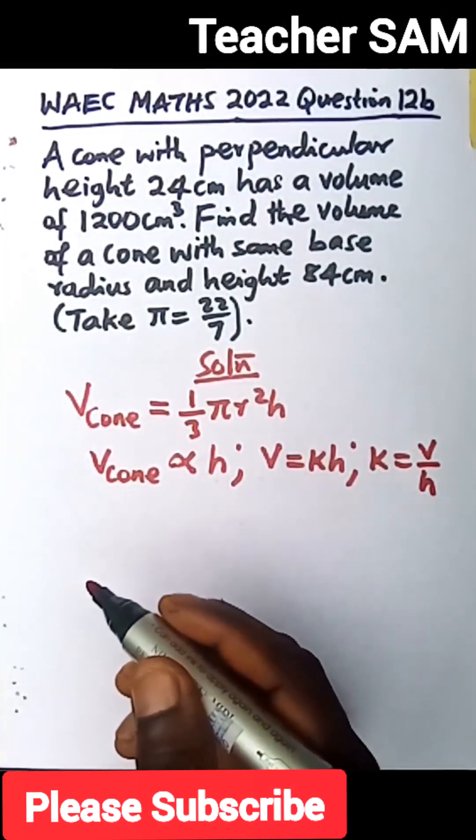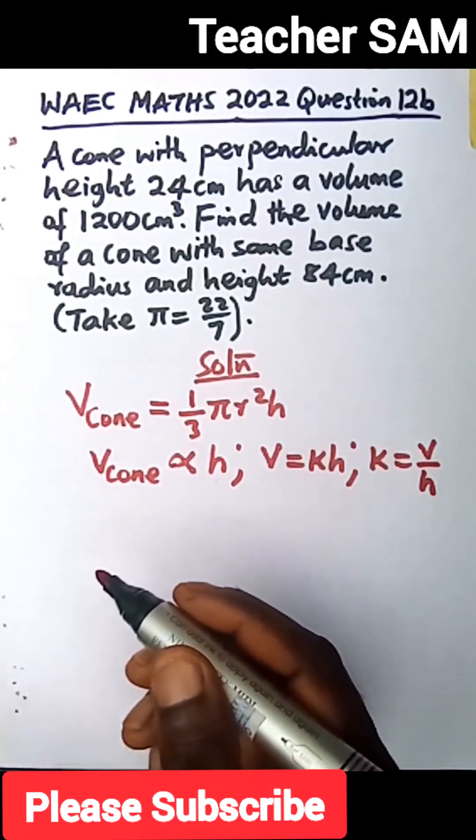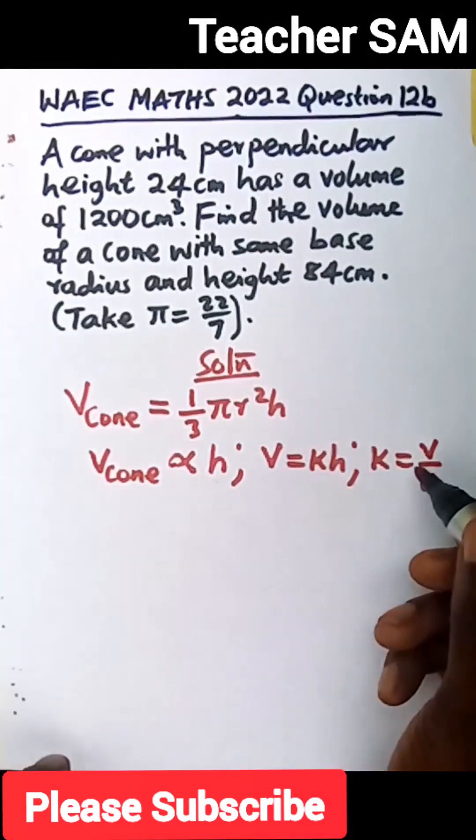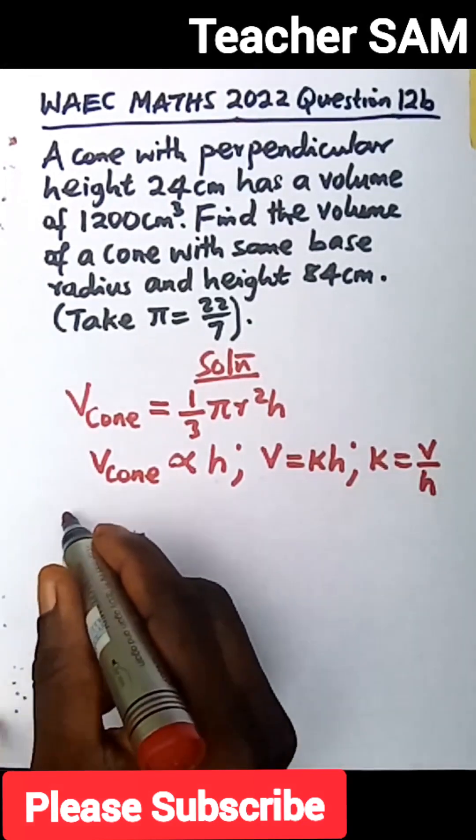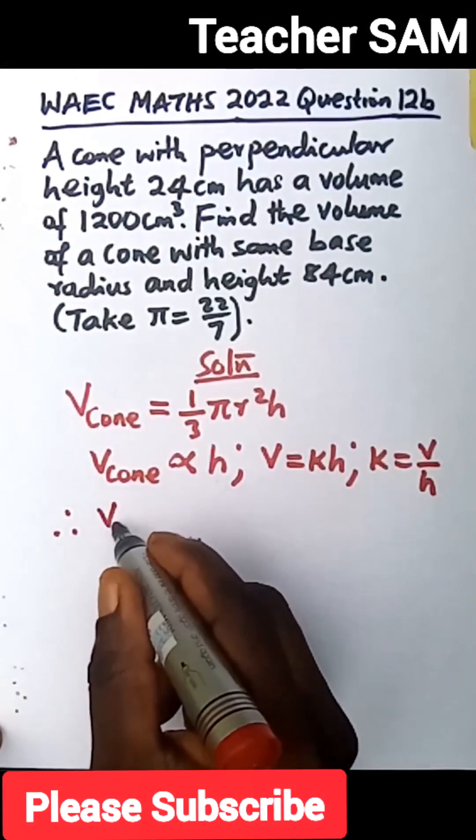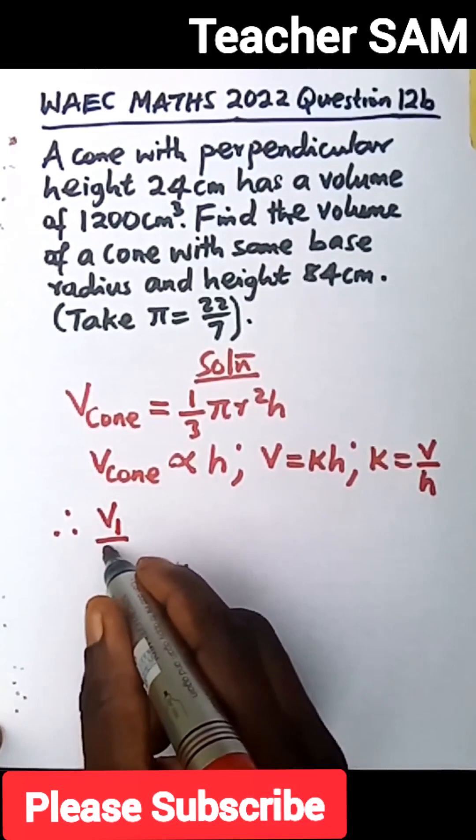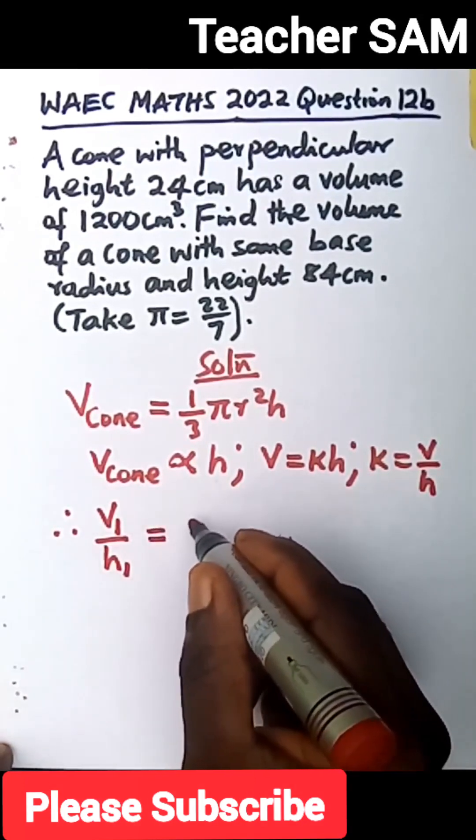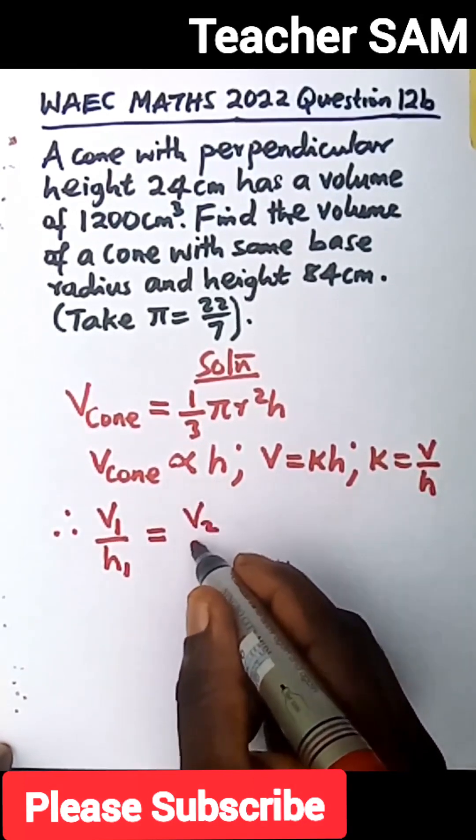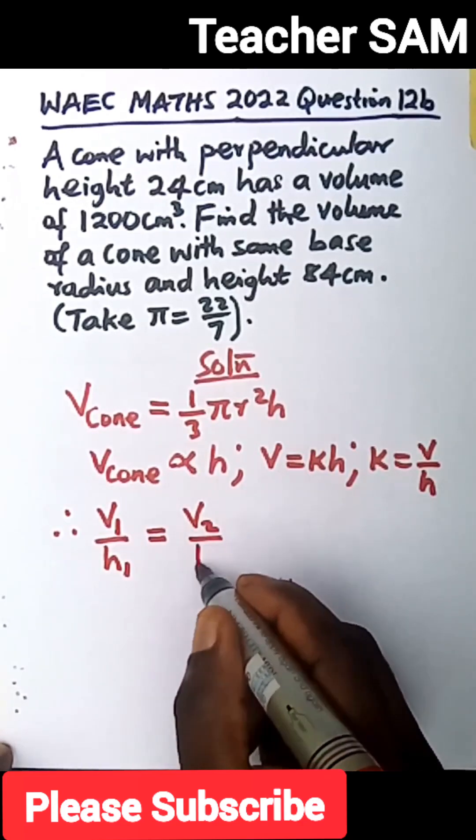We are looking at our two cones here of the same base. If they have the same base, we can relate them this way. Therefore, the volume of the first cone over the height of the first equals to the volume of the second over the height of the second.